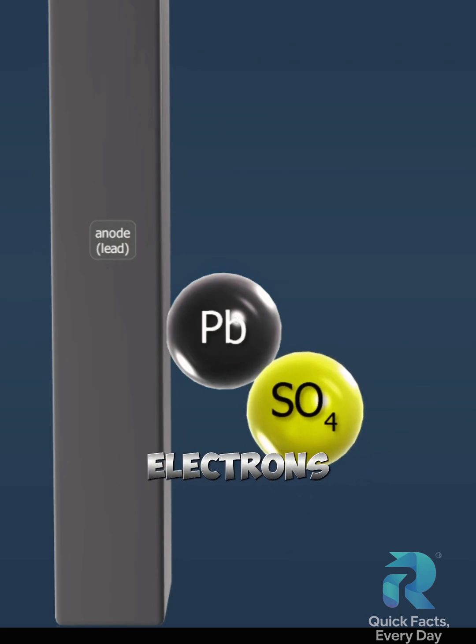When the circuit is closed, electrons start flowing from the lead plate, the anode, to the lead dioxide plate, the cathode, through an electrical load connected to the battery.